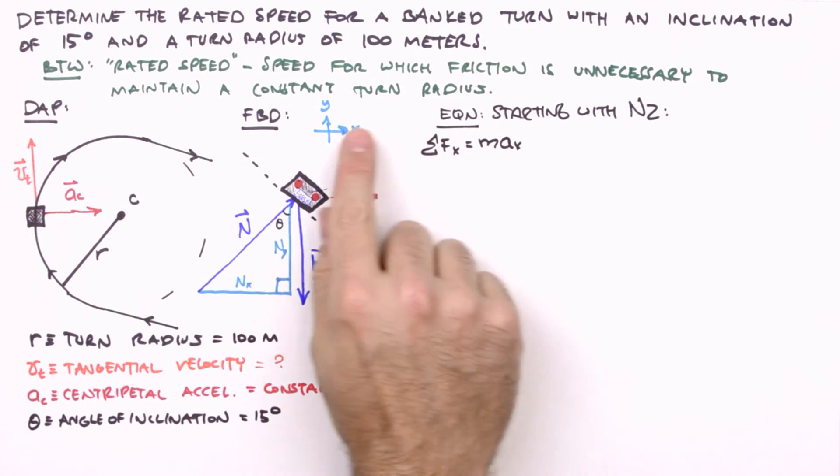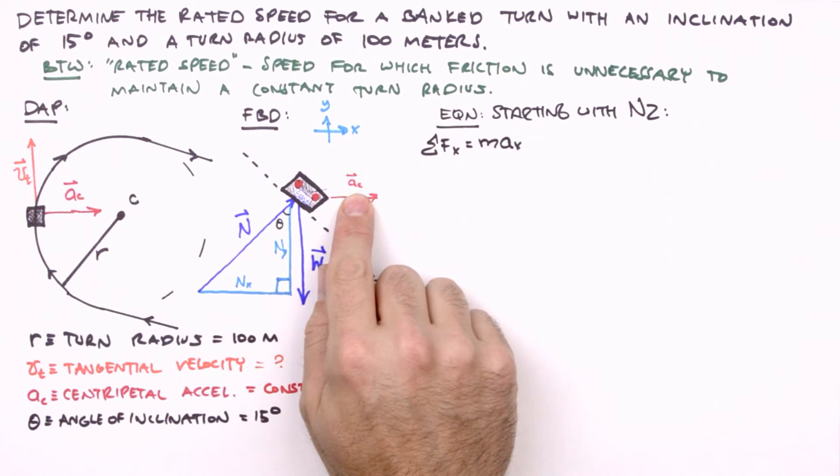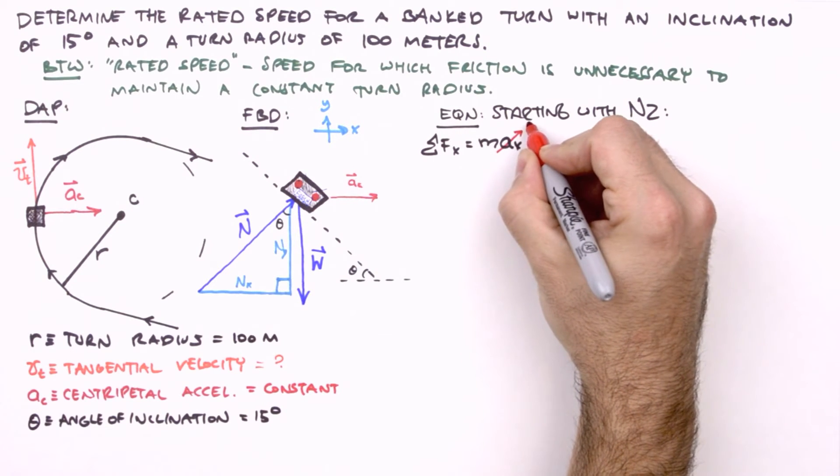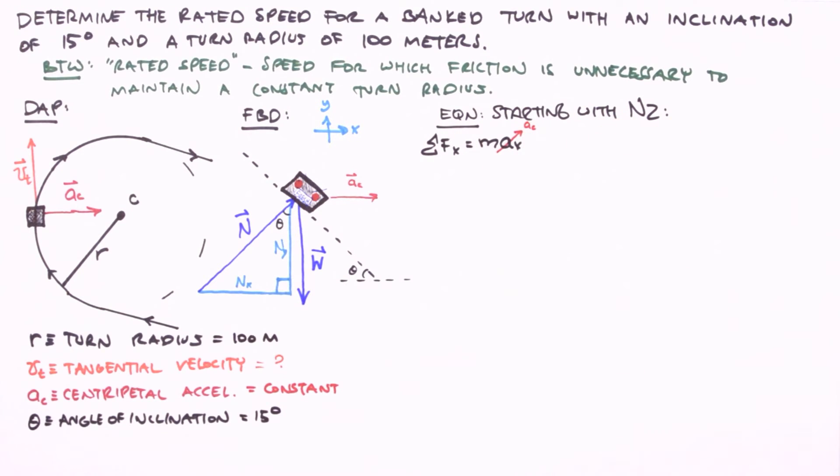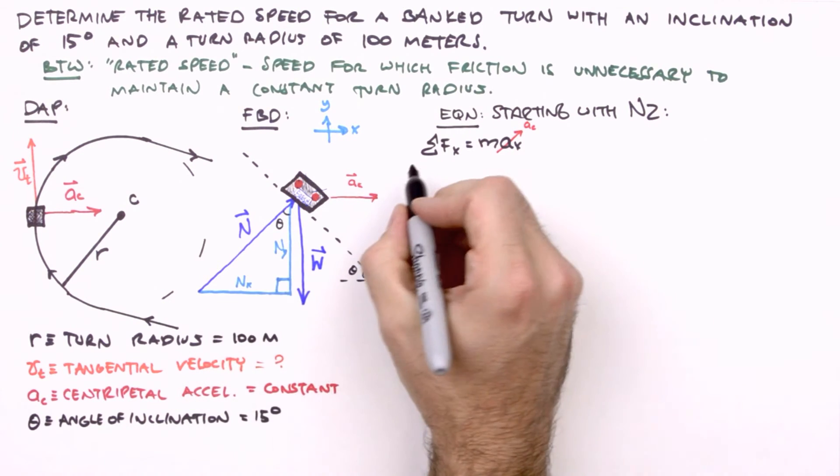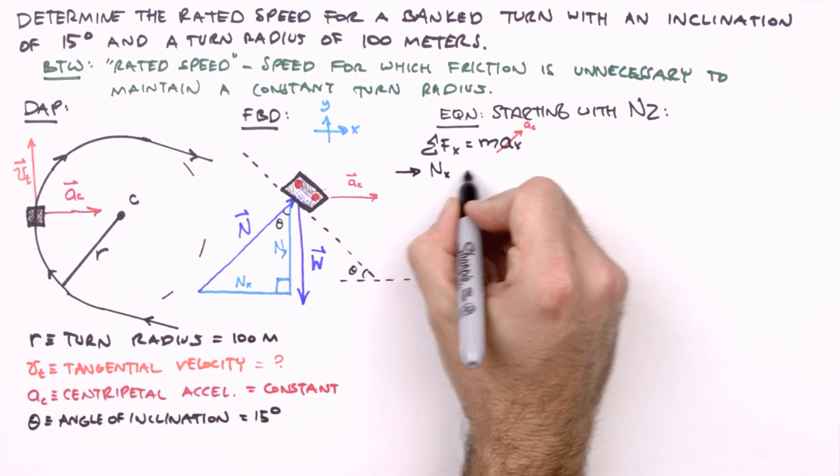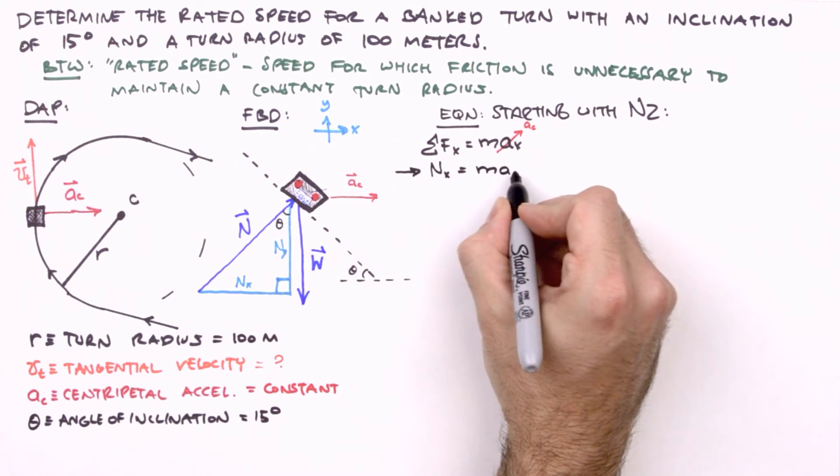Here, the acceleration in the x-direction is equal to its centripetal acceleration. So we'll set a sub x to a sub c. Summing our forces in the x-direction, we have just n sub x, the normal force in the x-direction. So we write n sub x equals m a sub c.